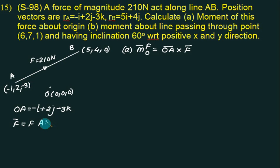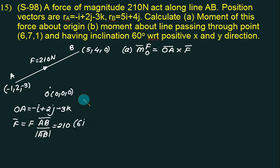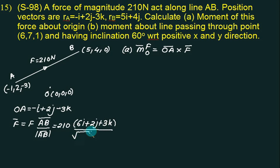The unit vector along AB equals AB bar upon modulus of AB bar. AB is coordinate of B minus coordinate of A: 5 minus minus 1 gives 6i; 4 minus 2 gives 2j; 0 plus 3 gives 3k. The modulus is the square root of 6 squared plus 2 squared plus 3 squared, which equals 7.